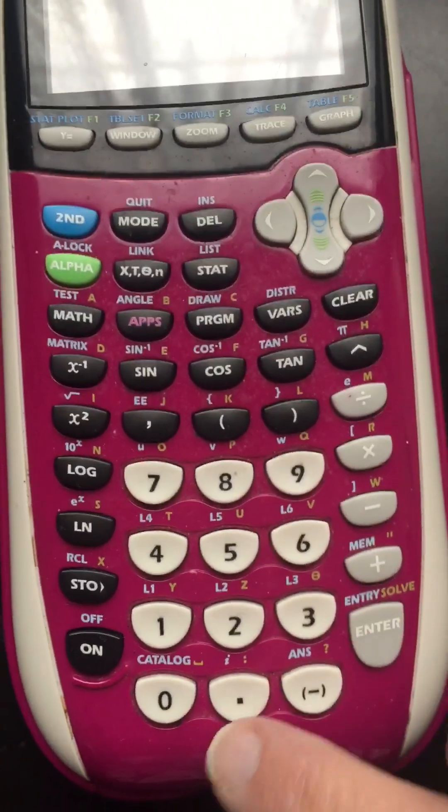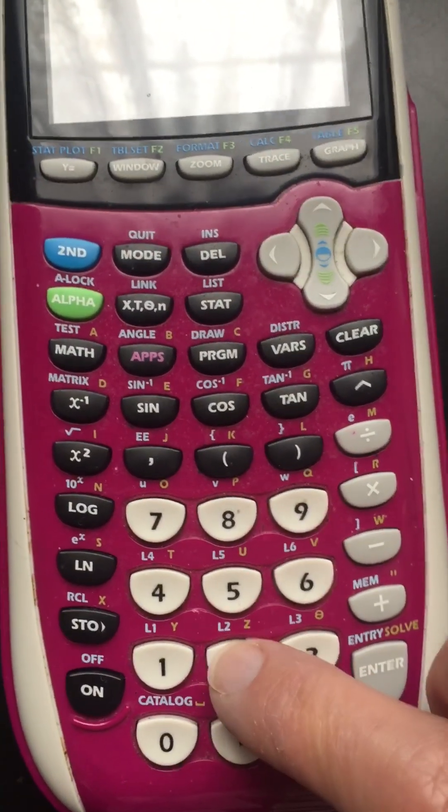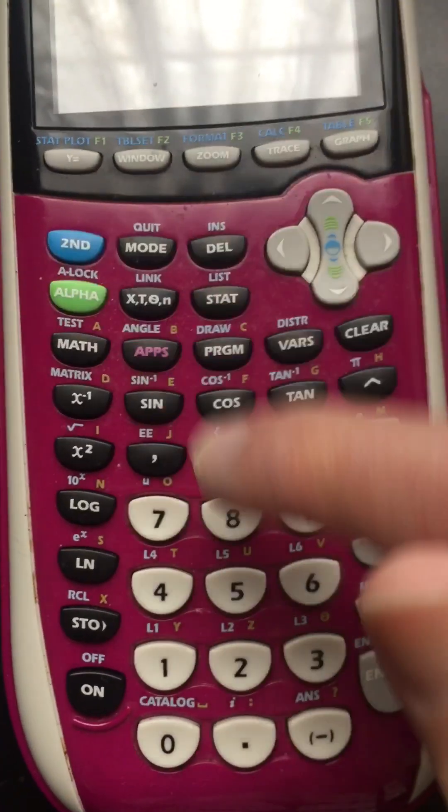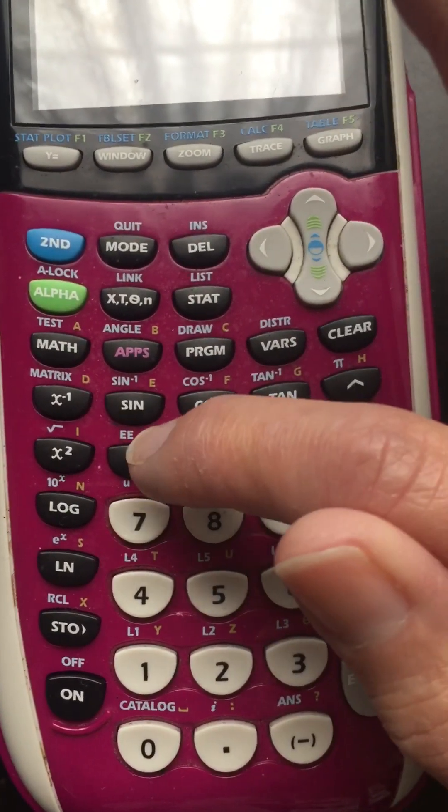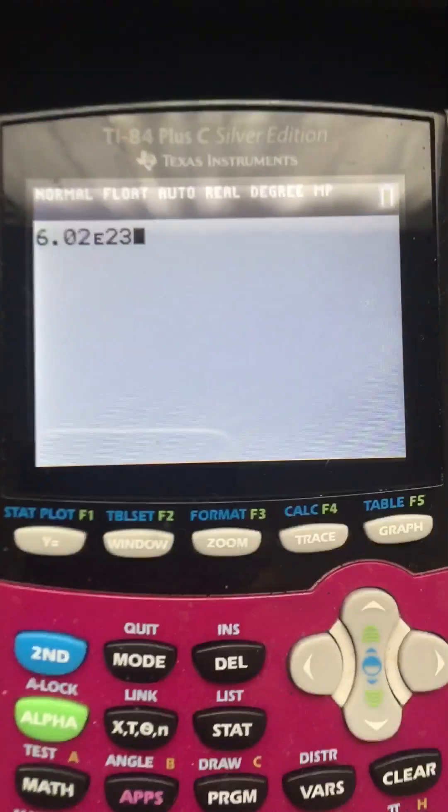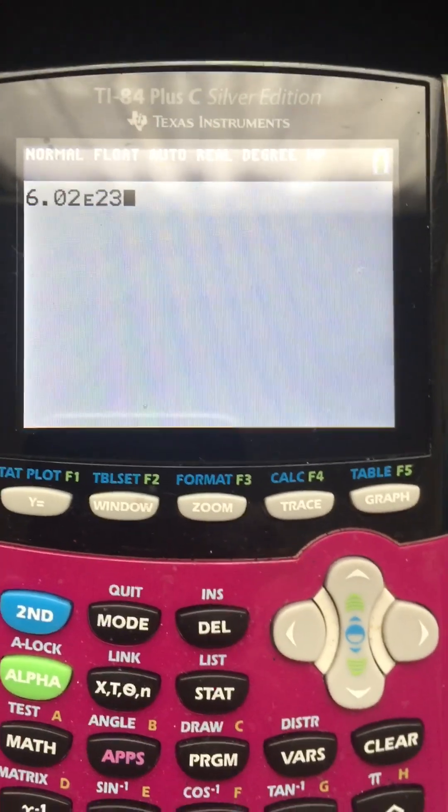So it is 6.02, sometimes it's 022 but we'll just say 6.02. Now we do second comma to get to the EE, that means times 10 to the 23rd. And so my display looks like that, 6.02 times 10 to the 23rd.